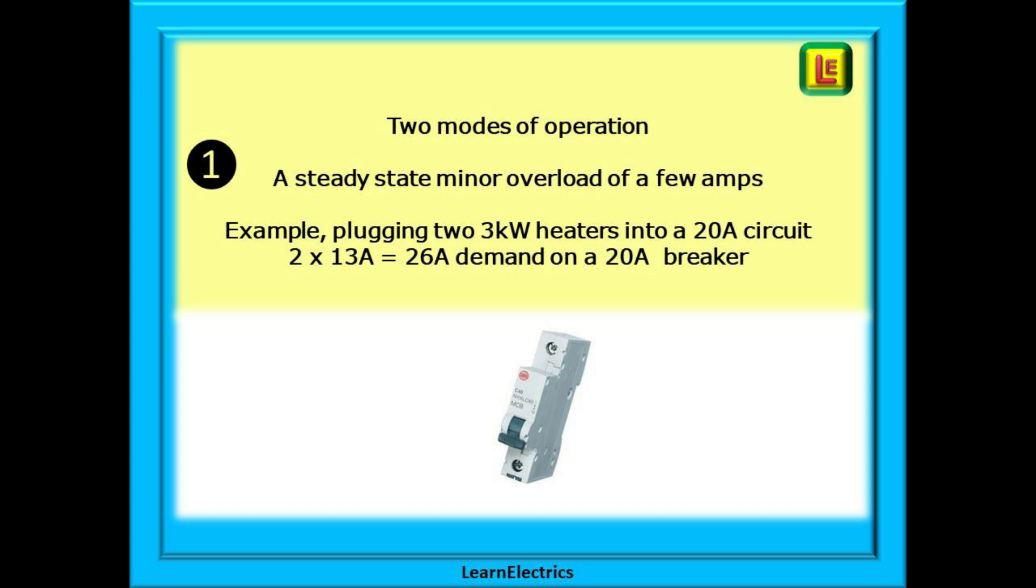A steady state small overload of a few amps will cause the MCB to trip after a period of time. For example, by plugging two 3kW heaters into a 20 amp circuit. This is two times 13 amps or 26 amps demand on a 20 amp breaker.